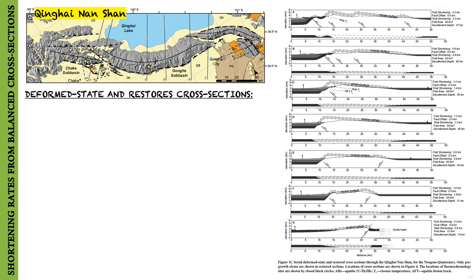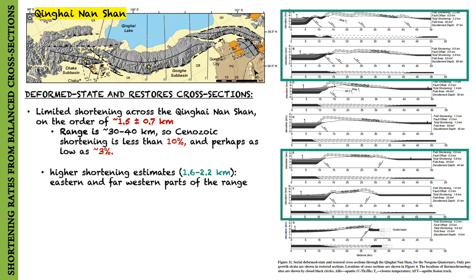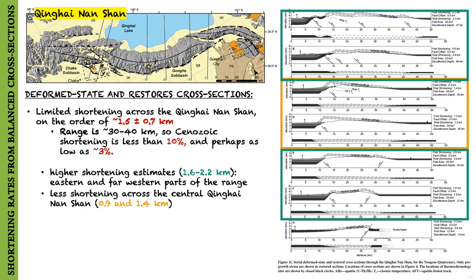Restoration of deformed-state cross-sections suggests that the present-day geometries reflect relatively limited shortening across the Qinghai-Nanshan, on the order of around 1.5 plus or minus 0.7 km. Given that the width of the range is 30 to 40 km, their estimates imply that Cenozoic shortening is less than 10% and perhaps as low as 3%. Along the central part of the range where the fault system appears to consist of a single structure, shortening estimates range between 0.9 and 1.4 km.